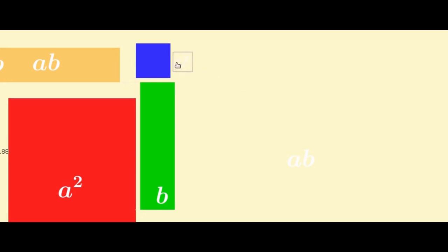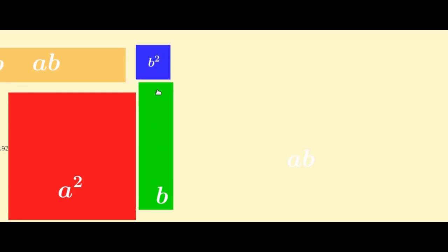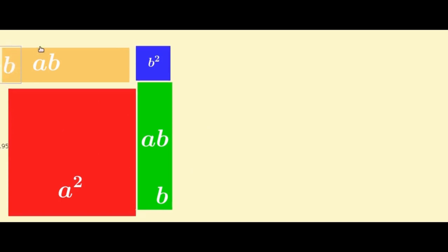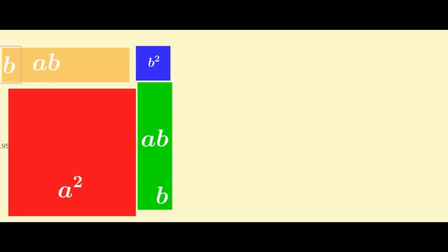This is b squared. On the side, let's say ab. Then it says ab. These two squares are a plus b squared. These are 4 pieces of area. That is the sum of the areas of these four rectangles. The area of this large square is equal to the sum of the areas of these four rectangles.